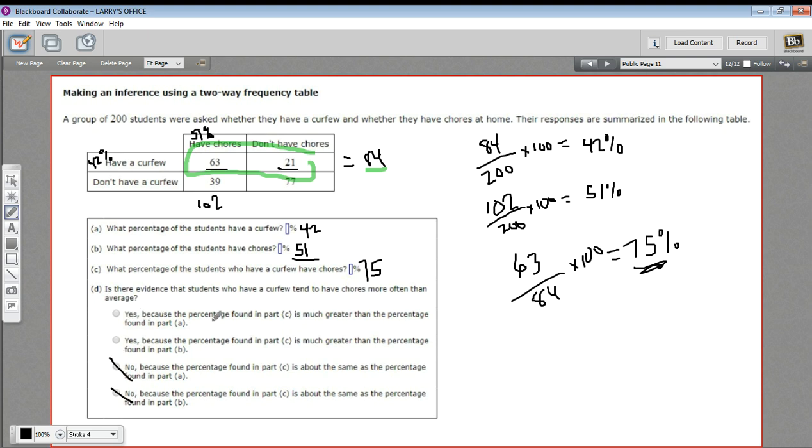And it says, yes, because the percentage found in part C, that's the 75, is much greater than the percentage found in part A. Well, part A just asked what percent have a curfew. So that's not really the comparison we're trying to make. The next one says, yes, because the percentage found in part C is much greater than the percentage found in part B. Yeah. Part C is the percent of students who have chores who have a curfew. And part B was just the percent of students of all of them who have chores. So that's what we're comparing. We're comparing the 75 to the 51, and the 75 is quite a bit greater. So I'm going to take the second answer here.